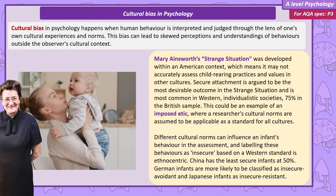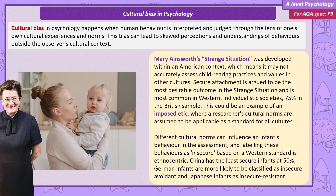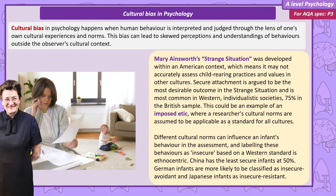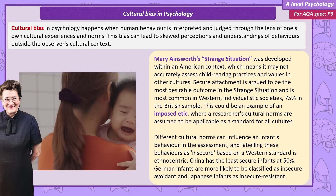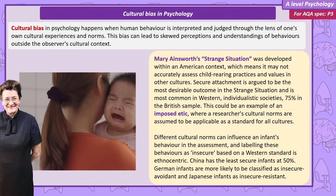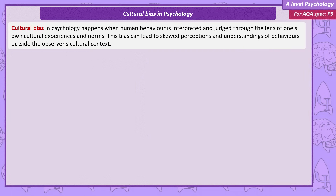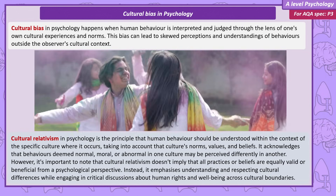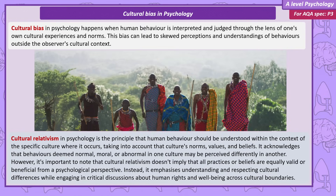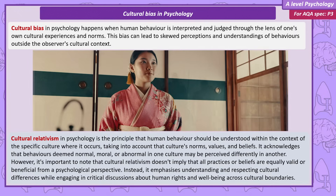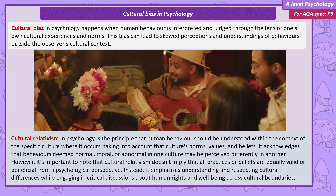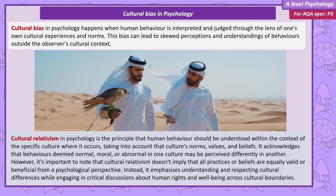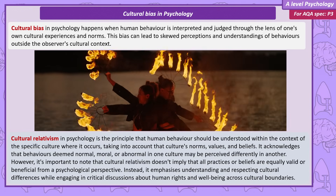In the strange situation, secure attachment is argued to be the best type, but it's far more common in individualistic Western cultures, with 75% in the British sample and as low as 50% in the Chinese. German infants were more likely to be insecure or avoidant, and Japanese infants were more likely to be insecure or resistant. We can use the term imposed etic here — this is when researchers argue their cultural norms should be the standard for all cultures. Cultural relativism is the principle that human behaviour can only be properly understood in the cultural context in which the behaviour happens, including the norms, values and beliefs of that culture. Cultural relativism assumes a behaviour considered normal, moral or abnormal in one culture might not be viewed the same way in a different culture. It's important to clarify that cultural relativism in psychology does not mean that all practices or beliefs are equally valid or even beneficial from a psychological standpoint — instead it's about understanding and respecting cultural differences, while we can still critically discuss human rights and wellbeing across cultural boundaries.